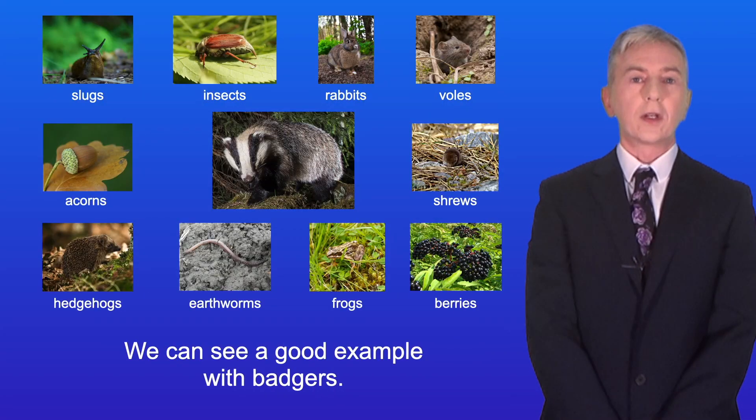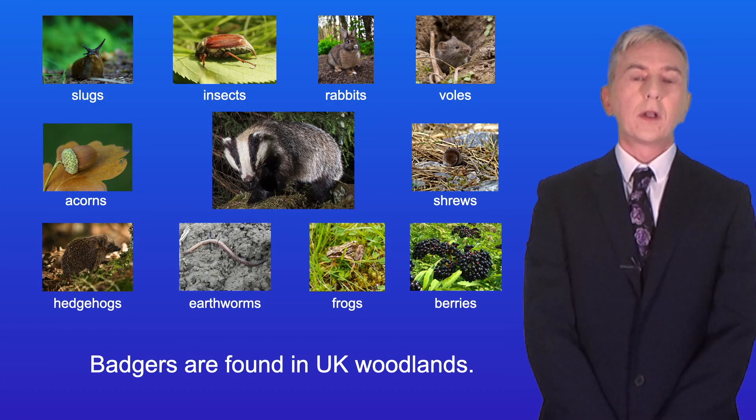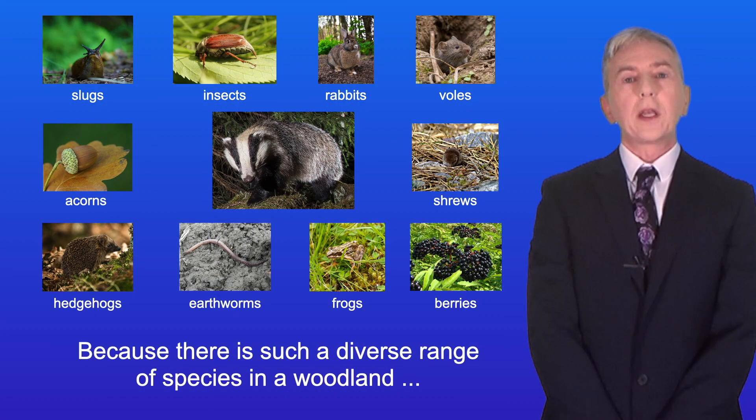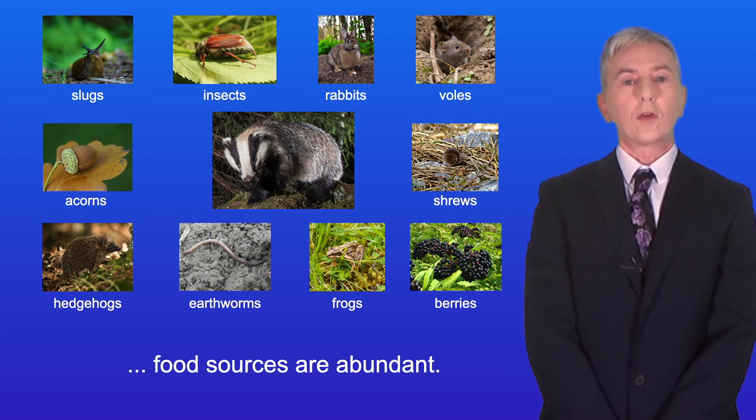We can see a good example with badgers. Badgers are found in UK woodlands and badgers eat a wide range of different species. Because there's such a diverse range of species in a woodland, food sources are abundant.